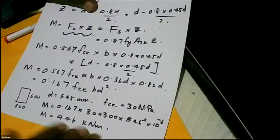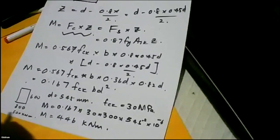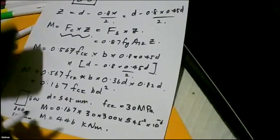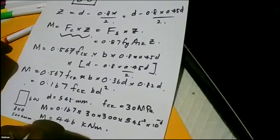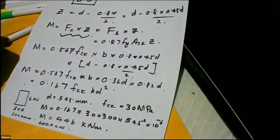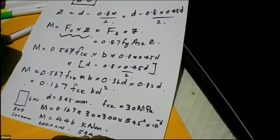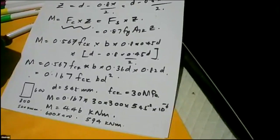If you want 500 kNm as single reinforced capacity, what shall we do? We can use 600 by 400. Then the capacity becomes 446 divided by 300 multiplied by 400, which gives 594 kNm. Because if we increase the width, we improve the moment-carrying capacity.